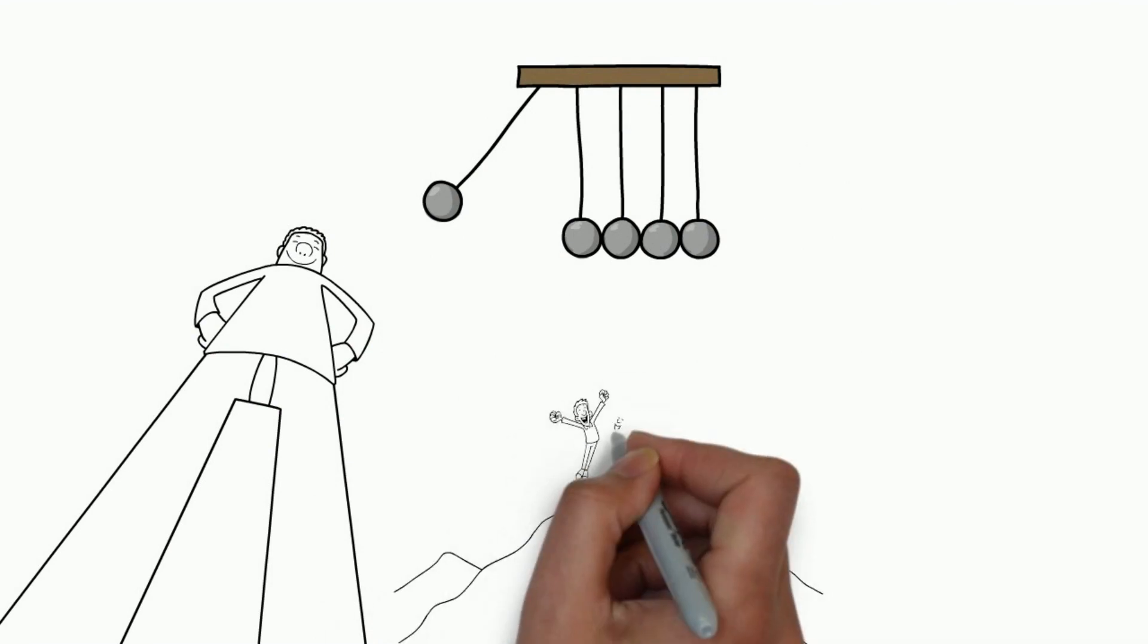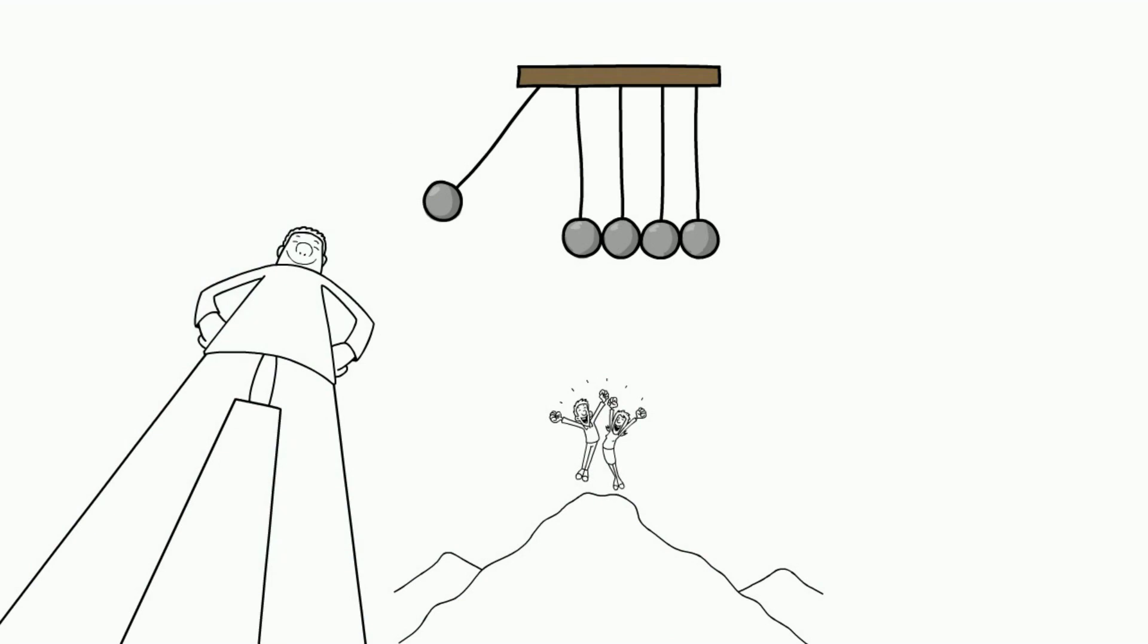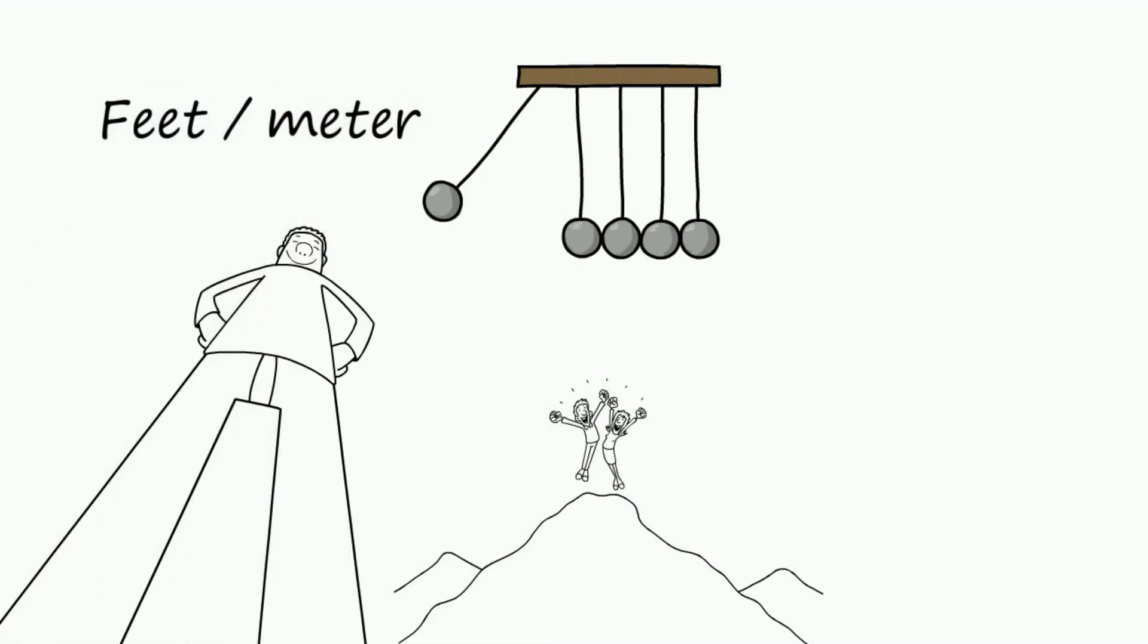We have already talked about what we mean by head. But in short, the head is a measure of the energy that a fluid possesses due to its position or motion. It's often expressed in units of length, such as feet or meters. The higher the head, the more energy the fluid has.